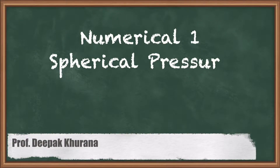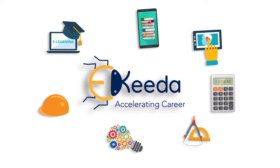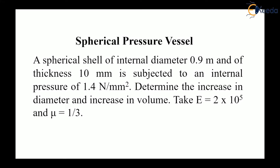Hello students. In this session let us solve this question of thin spherical shell. A spherical shell of internal diameter 0.9 meter and thickness 10 millimeter is subjected to an internal pressure of 1.4 megapascal. We have to determine the increase in diameter and increase in volume. Take E equal to 2 × 10⁵ megapascal and Poisson's ratio 1/3.